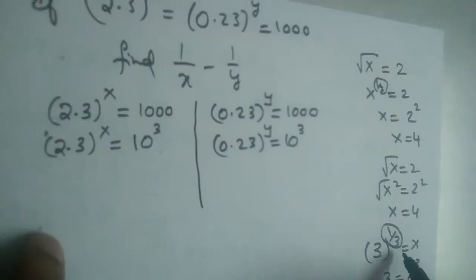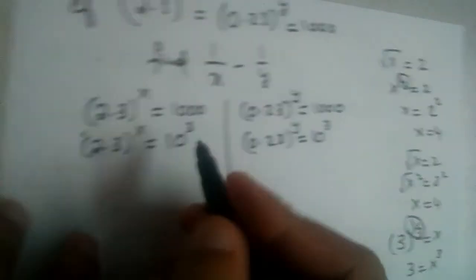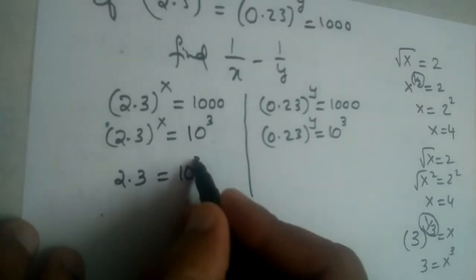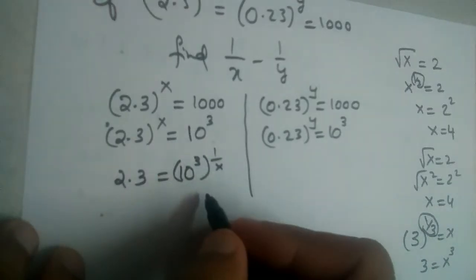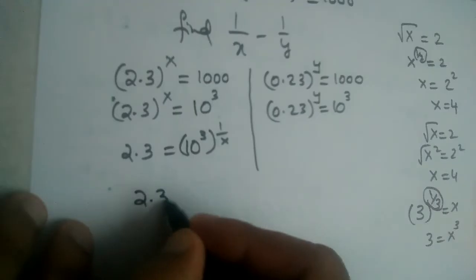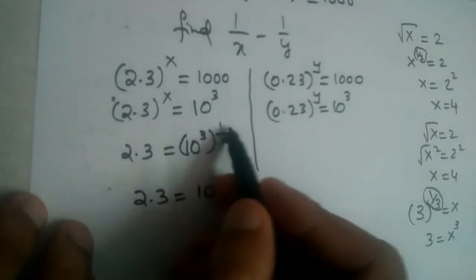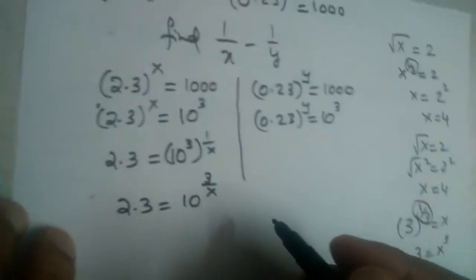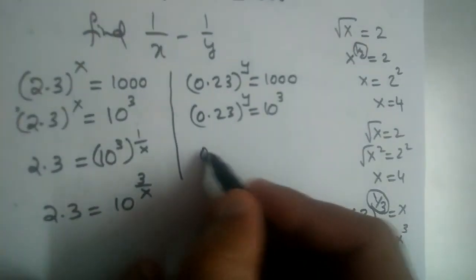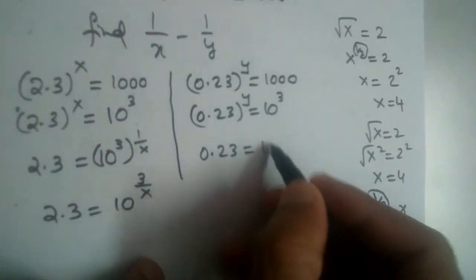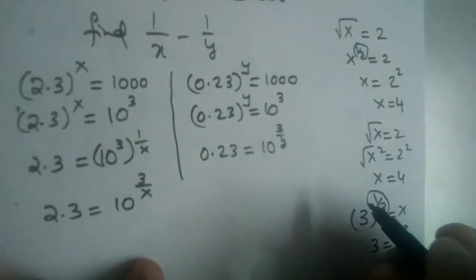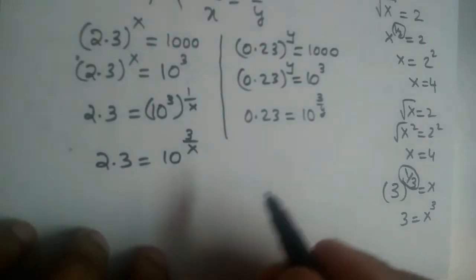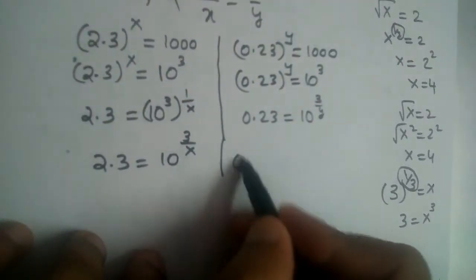Using the reciprocal power rule, sending the power x to the other side gives 2.3 equals 10 power 3/x. Similarly, sending power y gives 0.23 equals 10 power 3/y.